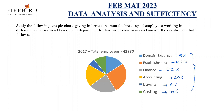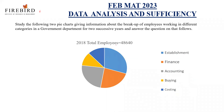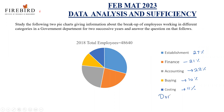Now let us see for 2018. In 2018, the total employees split up is: establishment 27%, finance 21%, accounting 22%, buying 10%, costing 11%, and domain expertise 9%.